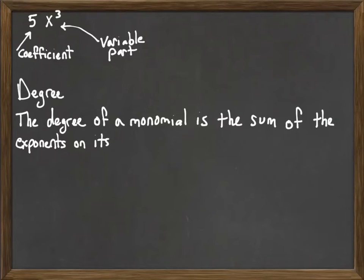Well, first we begin with a monomial. The degree of a monomial is the sum of the exponents on its variables. So when we have an expression with variables, we look at the exponents on those variables. Now that's for a monomial, a single term.